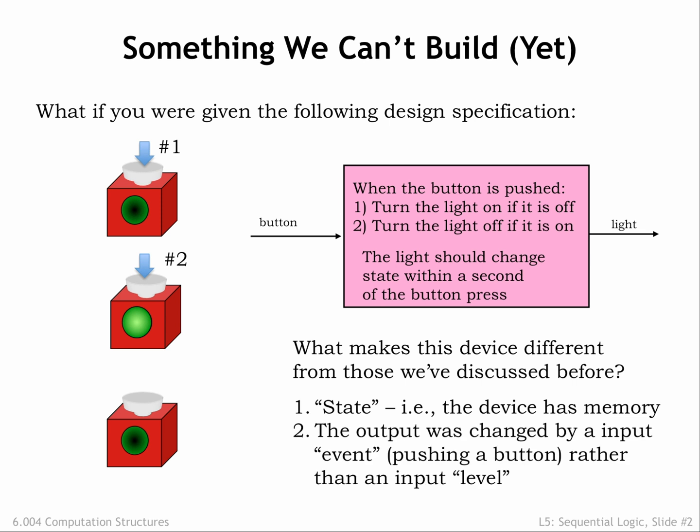The second difference is more subtle. The push of the button marks an event in time. We speak of the state before the push — the light is on — and the state after the push — the light is off. It's the transition of the button from unpushed to pushed that we're interested in, not whether the button is currently pushed or not.